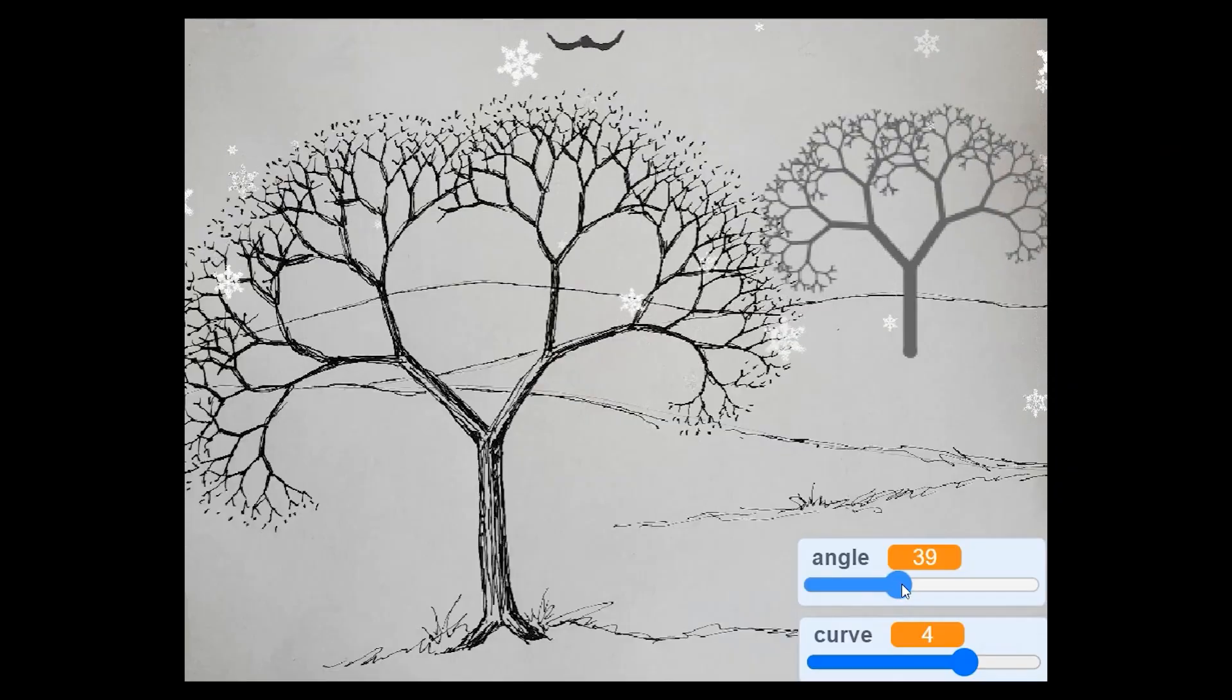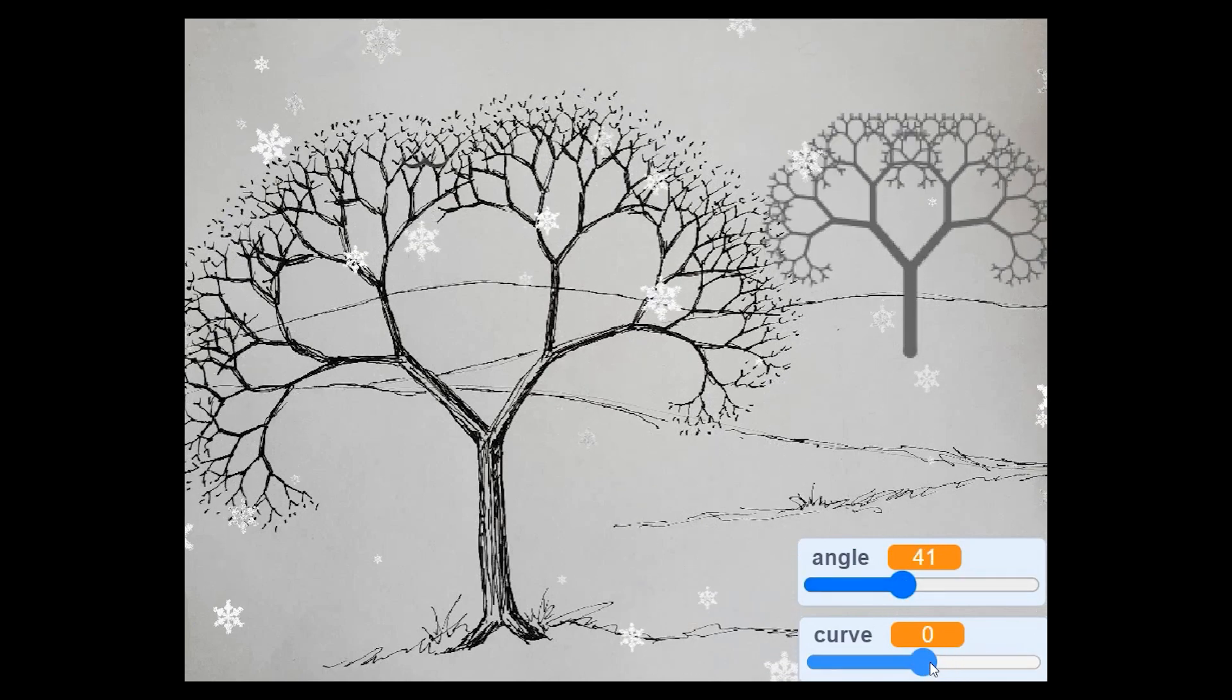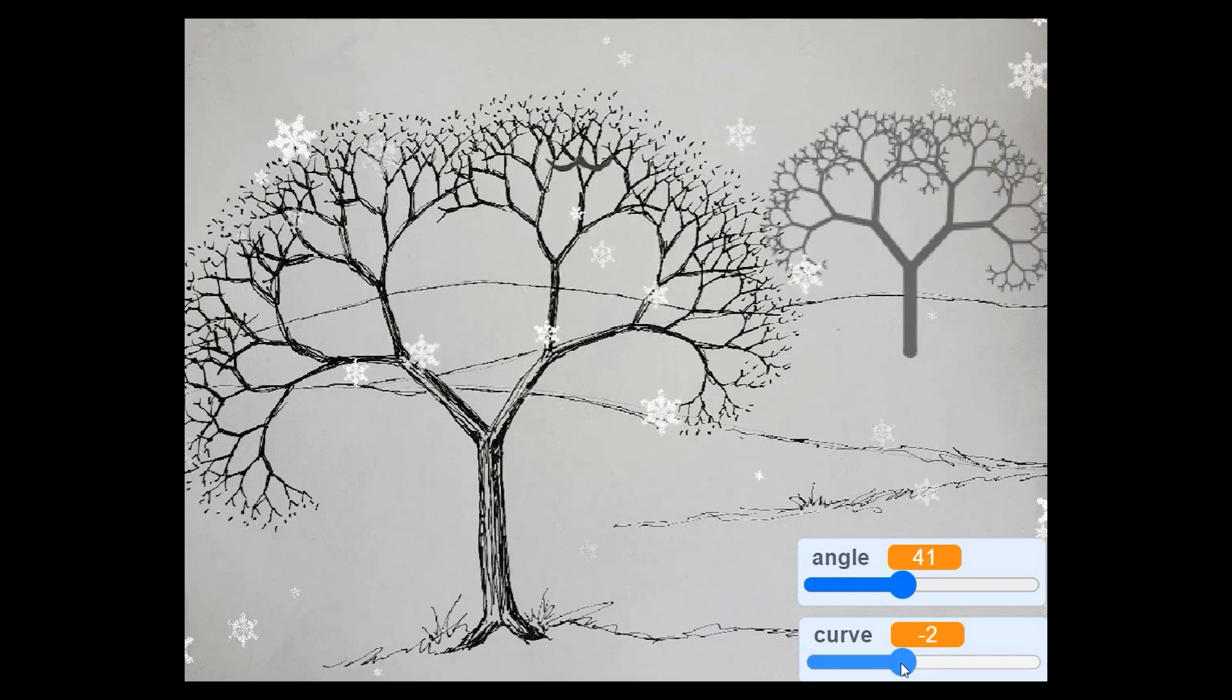You can create art forms by pulling in our drawing into Scratch and overlaying it with some coded fractals like snowflakes and another little tree wiggling in the background here.